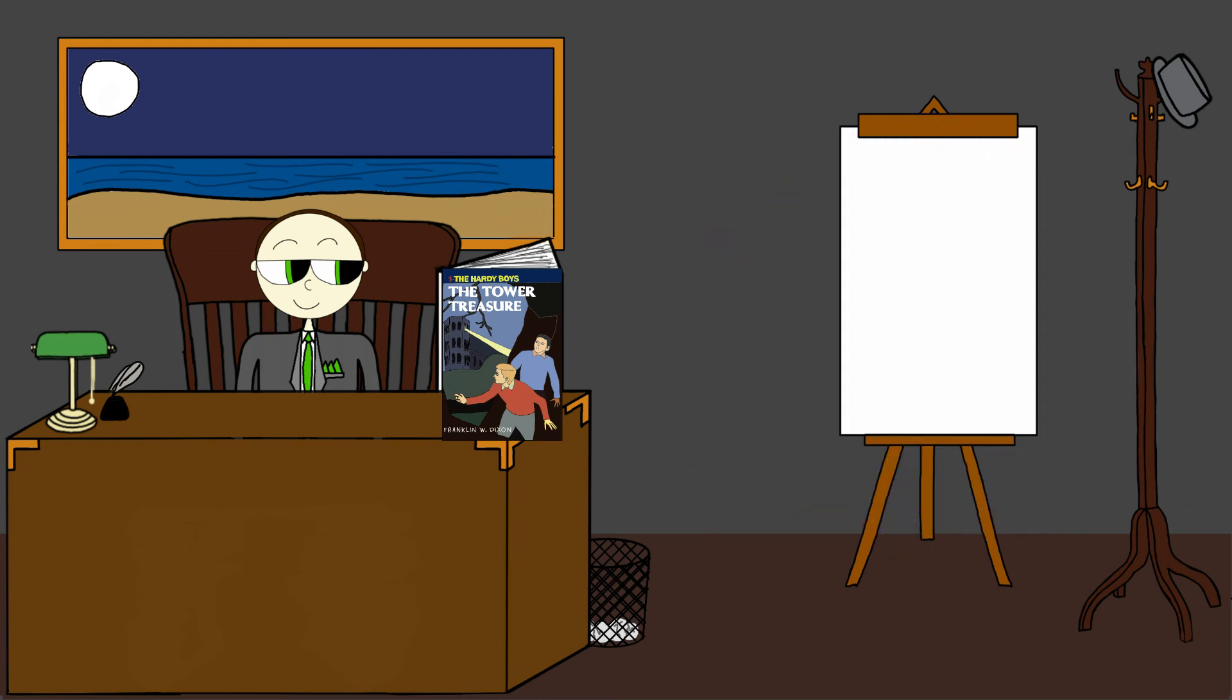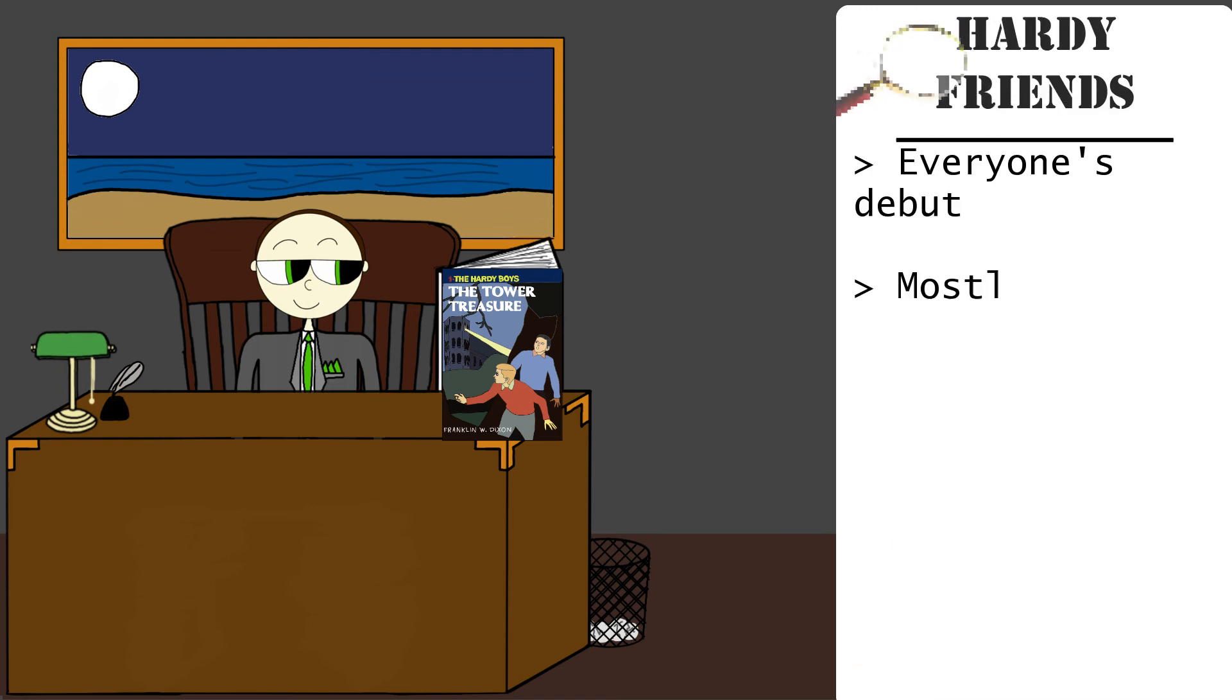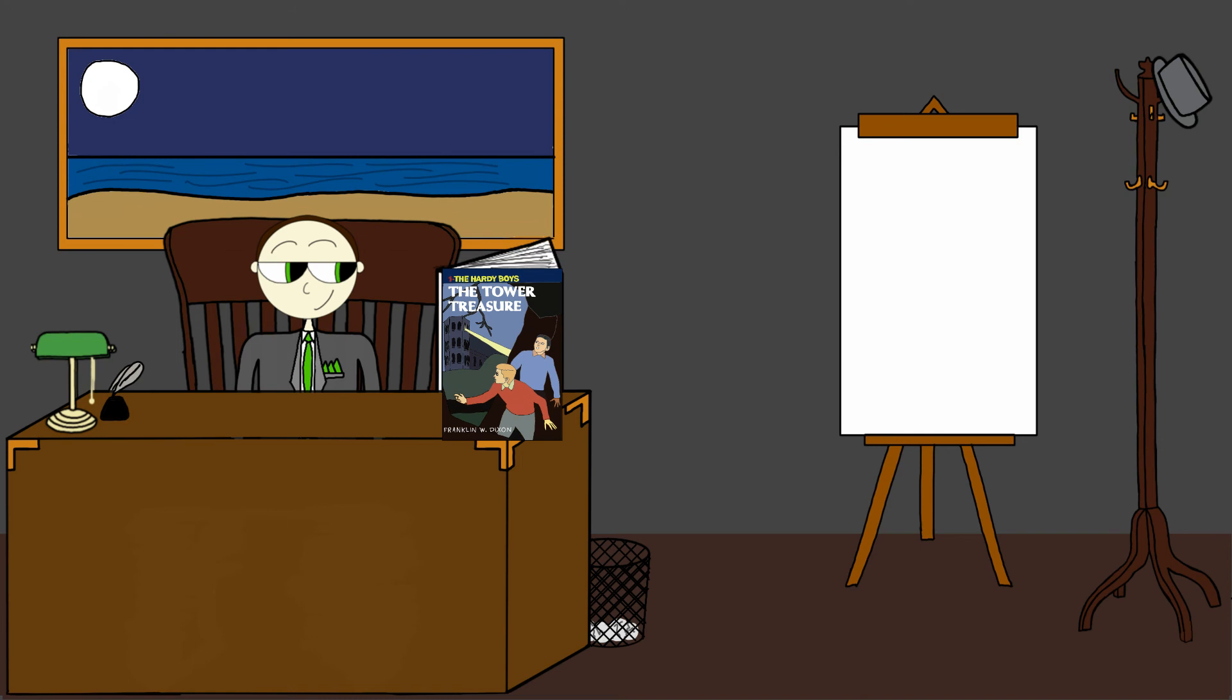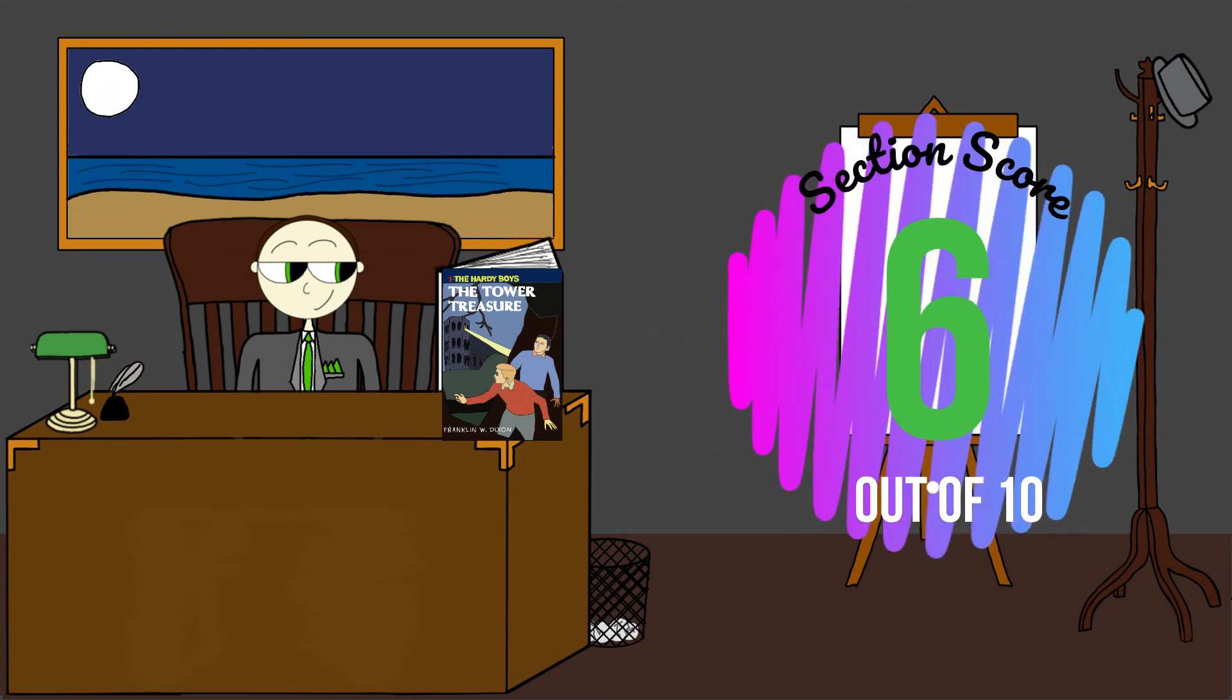The Hardy Boys' friends all make their first appearance in this book, with Chet, Tony, Phil, Jerry, Iola, Biff, and Callie all making their debut. They are all very loosely characterized, mostly in a few lines, but again, as the first book, the characters have room to grow. But they aren't used very much in this book, mostly as attendees at a party and the male friends as people to help find the jalopy. So here, the characters get a low-medium mark. We're going to give it a six as well.